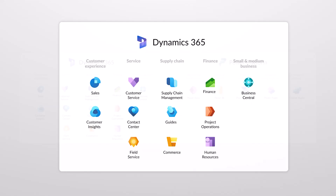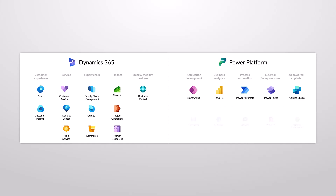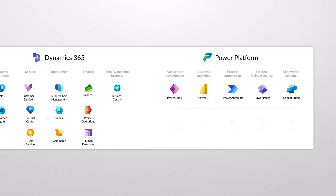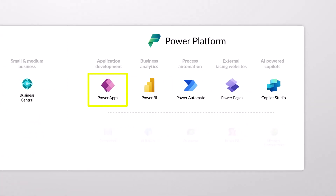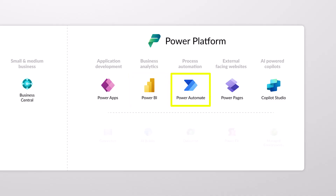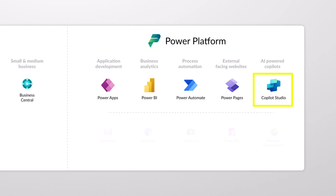Most organizations will want to make changes to Dynamics 365 apps or extend them with additional capabilities. This is where the Power Platform comes in — the no-code/low-code platform where you can build custom applications, processes, and visuals. Power Apps lets you enhance the UI of Dynamics 365 apps, customize layouts, and build additional smaller apps. You can use Power BI to analyze data, Power Automate for process automation, Power Pages to extend apps to external-facing websites, and Copilot Studio to build AI copilots that natively integrate with your Dynamics 365 apps.